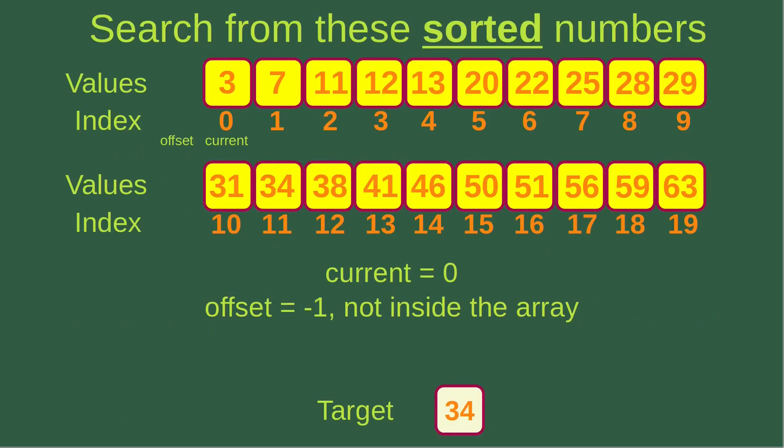Now let us see an example. Suppose I have 20 numbers and want to search for 34 from these 20 numbers. Before doing so, I set up the current index to be 0 and the offset index to be minus 1. Since the offset index is smaller than 0, meaning it is not inside the array, I put the offset index on the left-hand side of the current index.